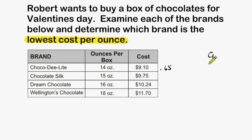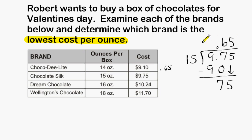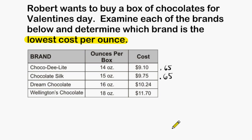For the second brand, we divide $9.75 by 15 ounces. We bring the decimal straight up, then divide 15 into 97, which fits 6 times — 6 groups of 15 is 90. The difference between 97 and 90 is 7; we drop down the 5, and 15 divides into 75 exactly 5 times. The price of the second brand is also 65 cents per ounce.